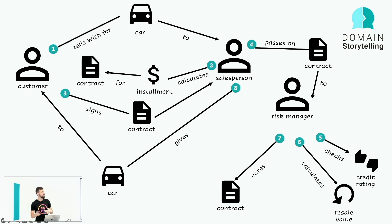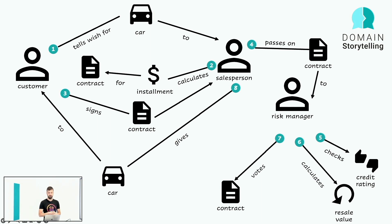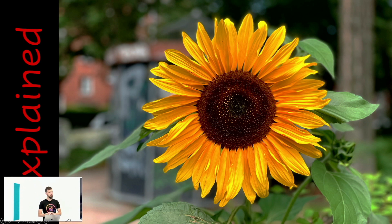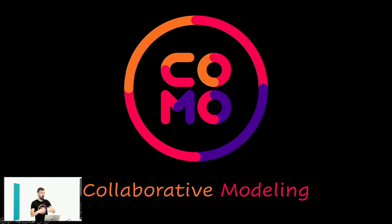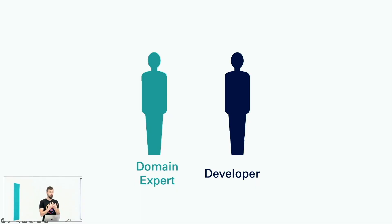We can already see why it's called Domain Storytelling: we want our domain experts, the people doing the work and using the software later, to tell their story — the story of what they are working on. Domain Storytelling is one method out of a family of methods called collaborative modeling. The idea is getting developers out of their dark basement rooms and bringing them together with the domain expert. We're not modeling on our own; we're building the model together with our domain expert. That's why it's called collaborative modeling.